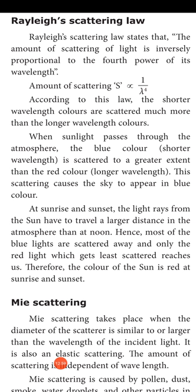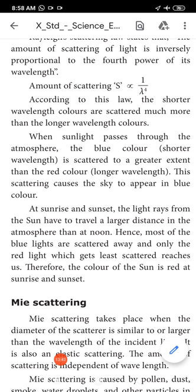Among all the colors in VIBGYOR — that is the rainbow with 7 colors — violet is at the bottom and red is at the top. Among these 7 colors, red color has the longer wavelength and blue color has the shorter wavelength. So blue color, having a shorter wavelength, will be scattered more, and red color, having a longer wavelength, will be scattered less.